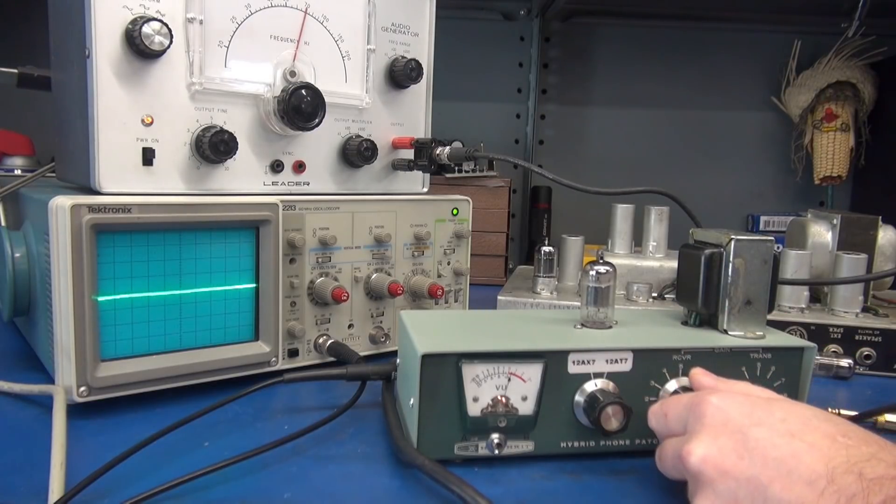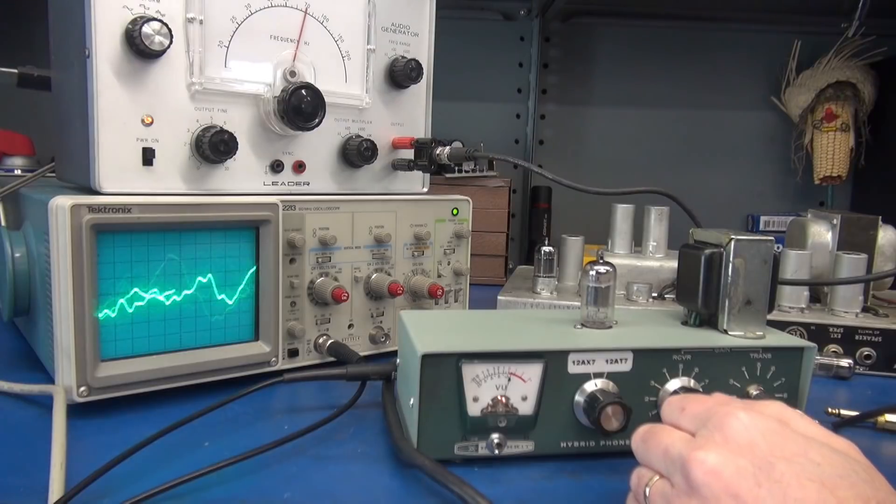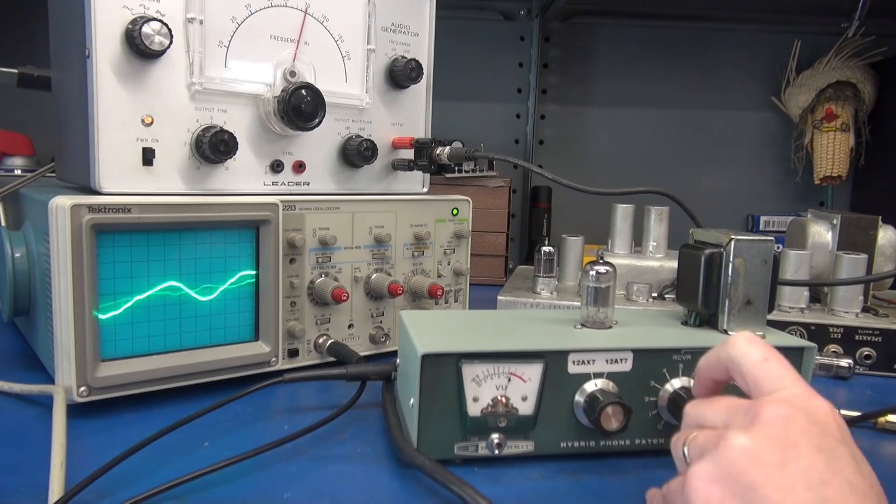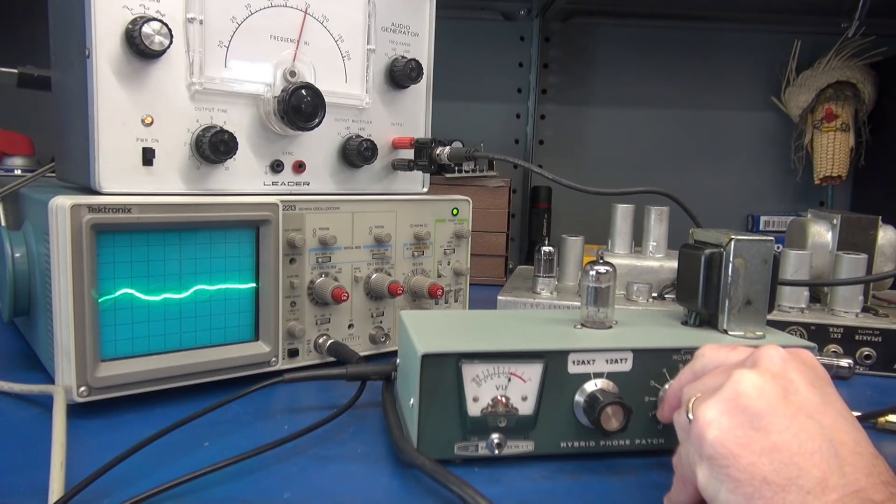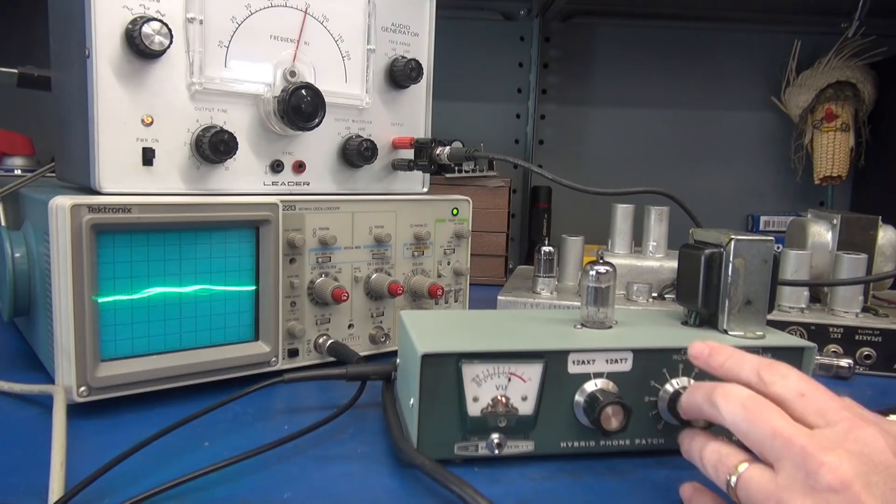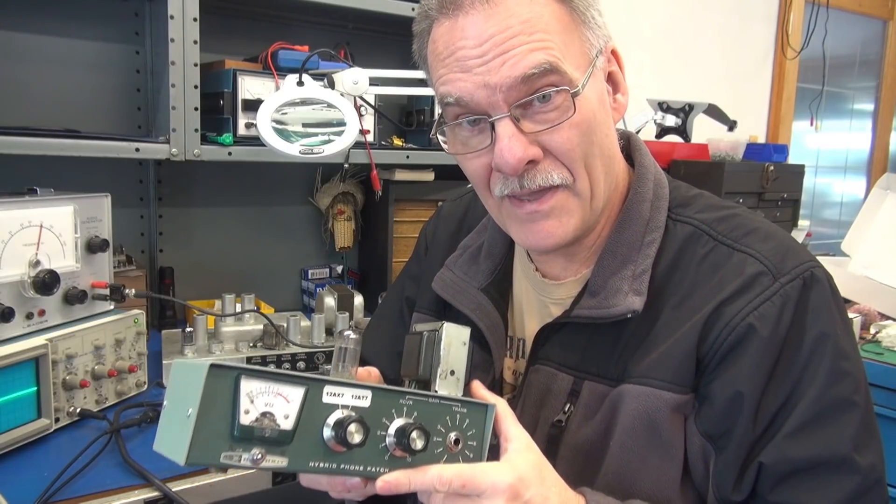Alright, so I'm going to go ahead and turn her up a little bit. So there is your guitar output. Okay, so you can see I'm at about 0.1 volts per division. So you're seeing maybe a half volt signal or so. So if you were to throttle this back, you could actually drive your guitar amp and listen to that tube. So that's a pretty cool little compact unit isn't it?